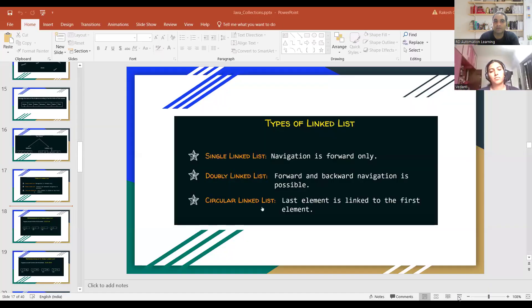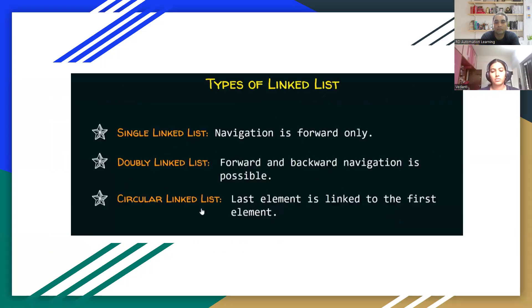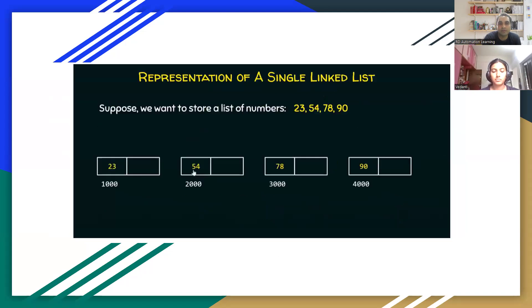Is the screen visible? Yes sir. So there are three types of linked list: singly linked list, doubly linked list, and circular linked list. In a singly linked list navigation is forward only. In a doubly linked list both forward and backward navigation is possible. In a circular linked list the last element is linked back to the first element.